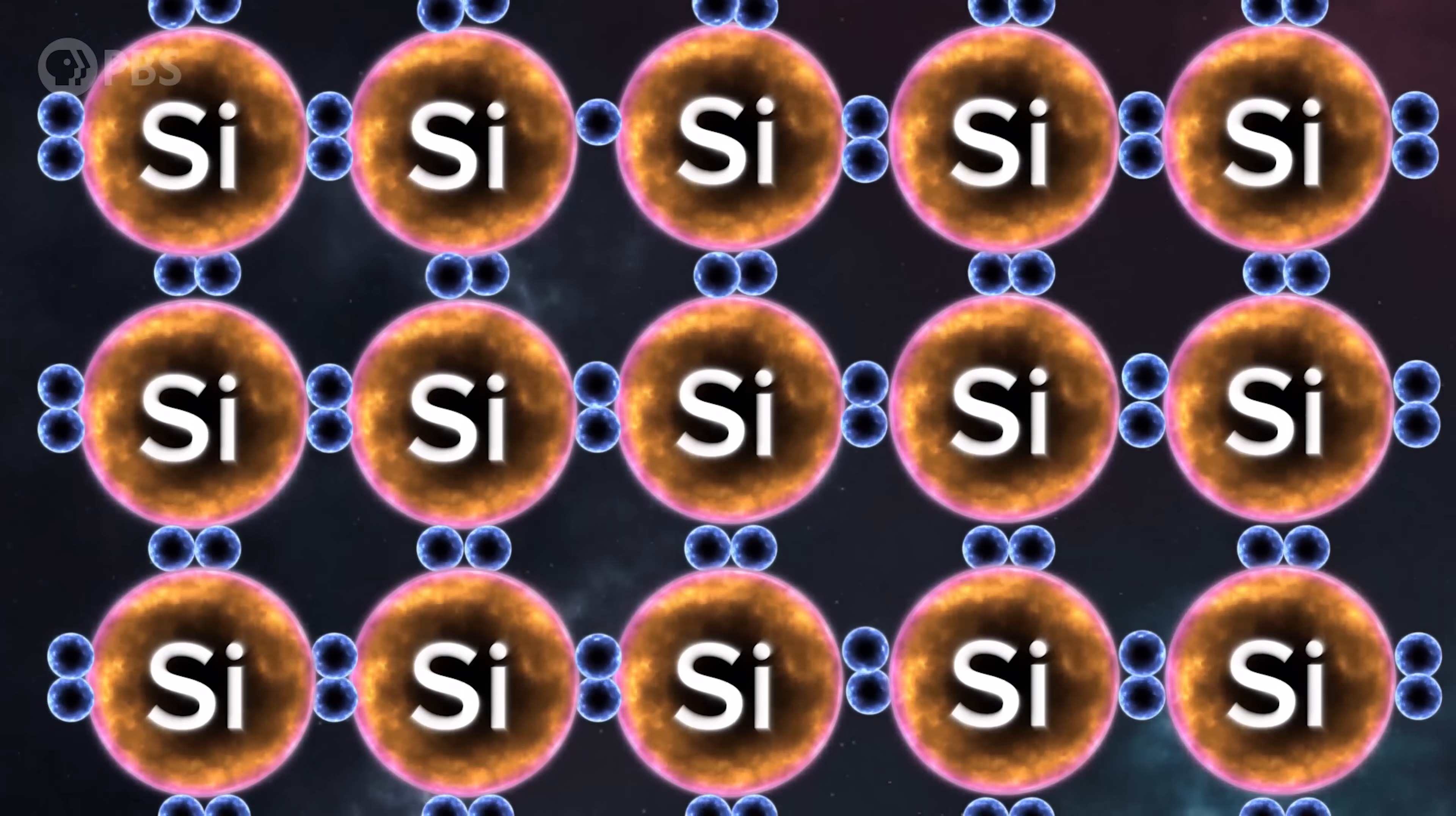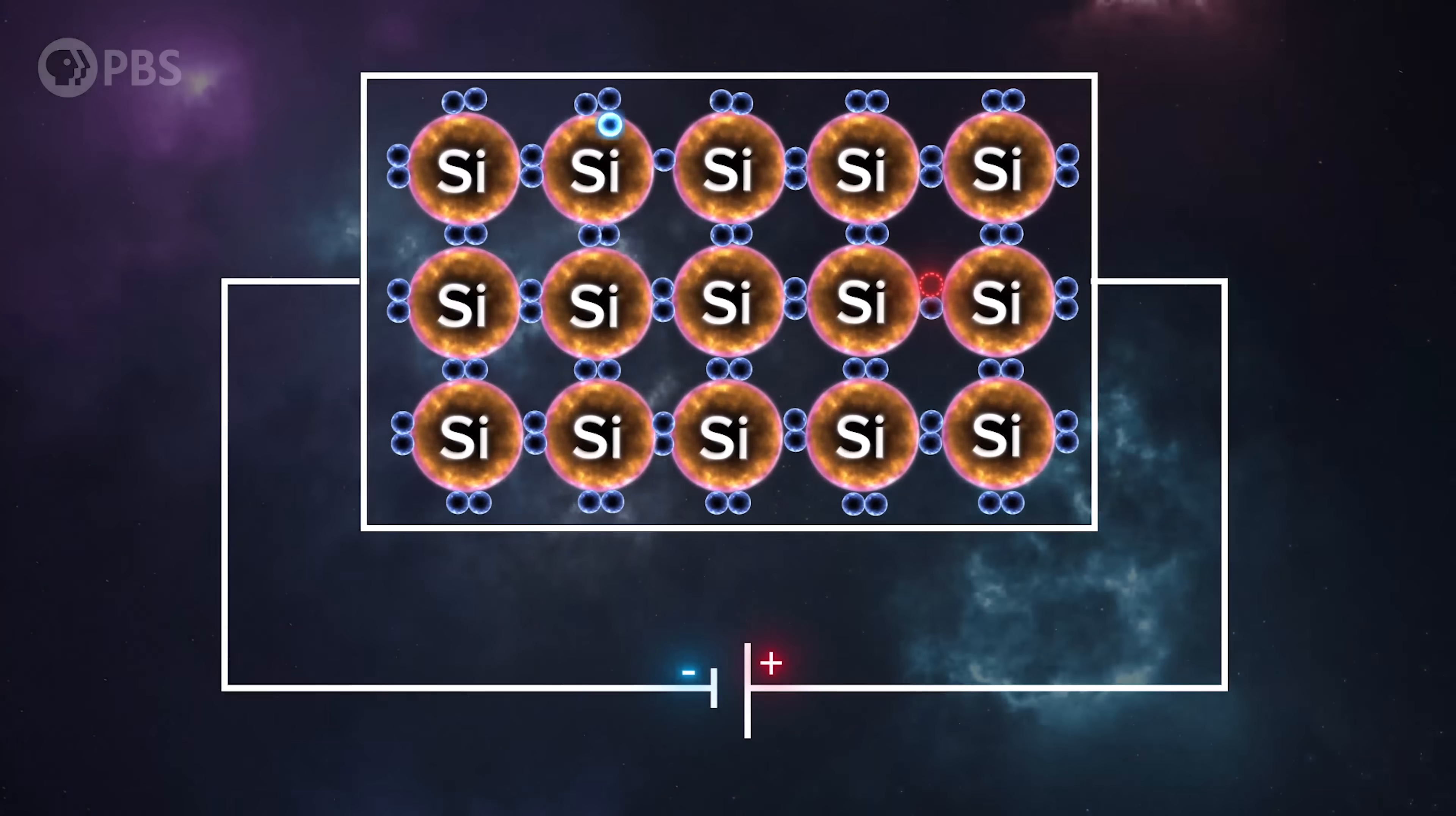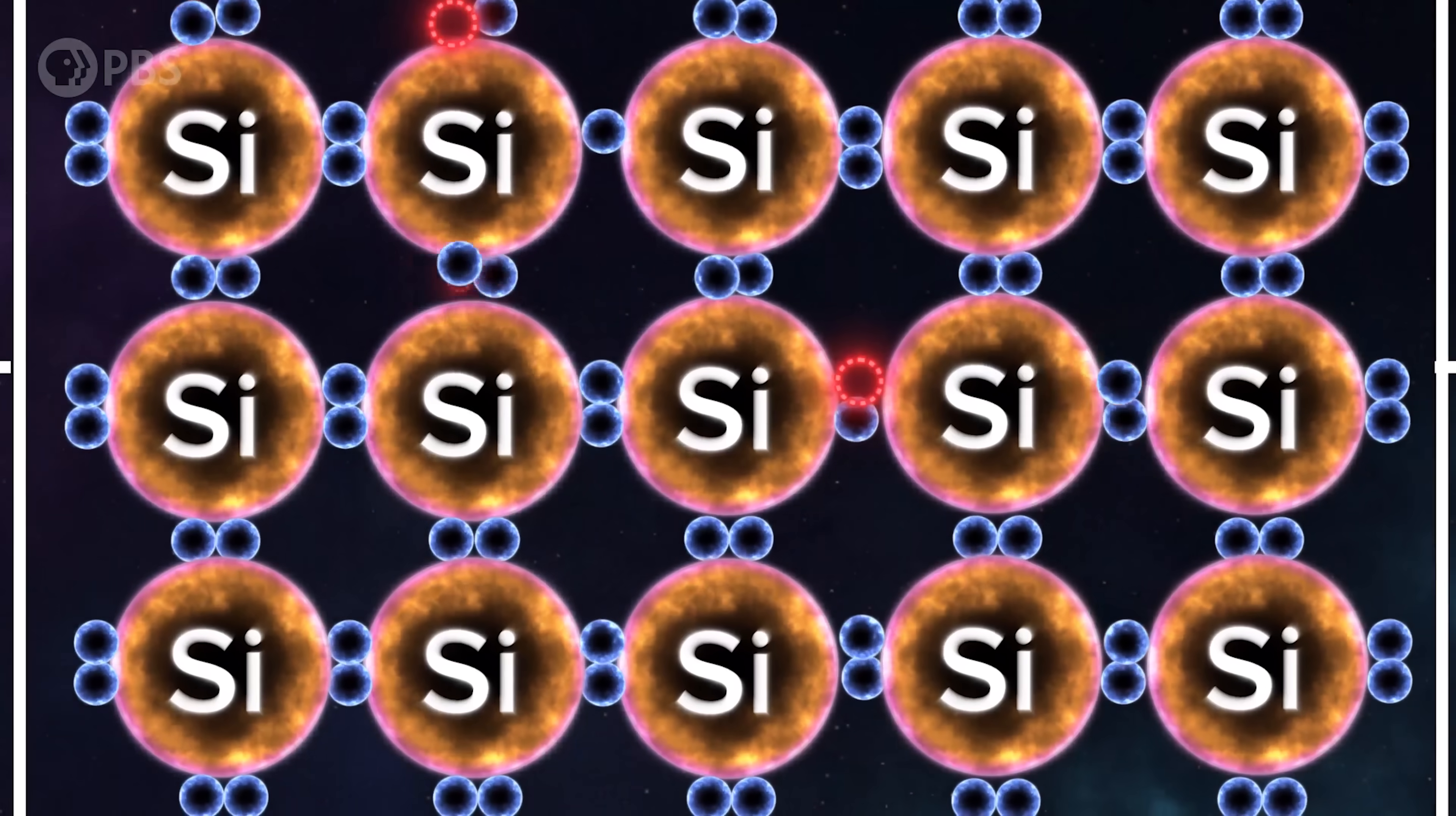But they can still get bumped up to higher energy states, say by thermal vibrations, or in the case of solar cells, by a photon. At which point the electron is free to move from atom to atom, for example if pulled by a voltage applied across the silicon. Meanwhile, the gap left by this electron allows some movement in the valence shell. A neighboring electron can move there, and its neighbor can fill the new gap, and so on.